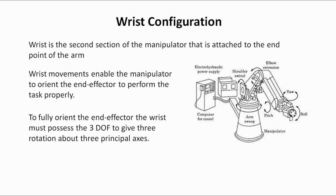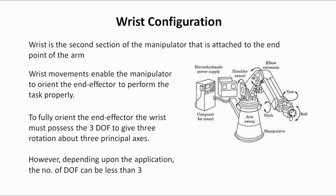Three degrees of freedom give three rotations about the three principal axes: the x-axis, y-axis, and z-axis. But depending upon the application and how we want to orient the end effector, the degree of freedom can be less than three. For example, if an application only requires two degrees of freedom, the mechanical design of the wrist will be according to two degrees of freedom.